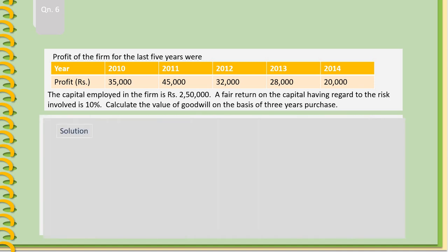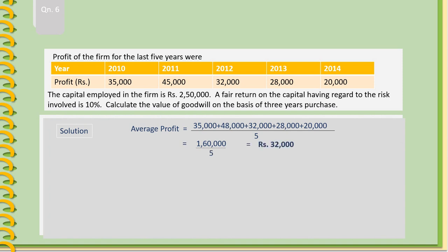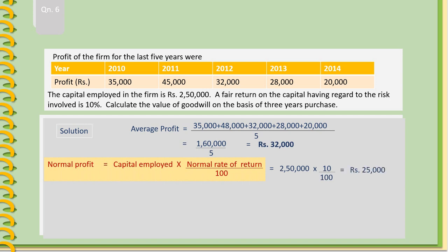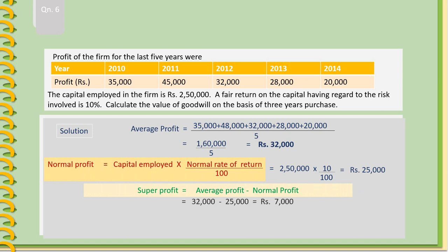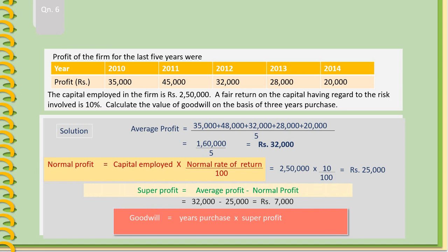Average profit equals 35,000 plus 48,000 plus 32,000 plus 28,000 plus 20,000 divided by 5 equals 1,60,000 divided by 5, which is Rs. 32,000. Normal profit equals capital employed into normal rate of return divided by 100: 2,50,000 into 10 by 100 equals Rs. 25,000. Super profit equals 32,000 minus 25,000 equals Rs. 7,000. Goodwill equals 3 into 7,000 equals Rs. 21,000.